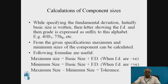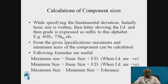When specifying the fundamental deviation, the basic size is written first, followed by the letter showing the fundamental deviation, and the grade is expressed as a suffix. For example, 40B7 — the capital B indicates the component is a hole, it indicates the type of fundamental deviation, and 7 is the suffix indicating the grade of tolerance. Similarly, 75h8 — h is lowercase indicating a shaft, and 8 indicates the grade of tolerance.